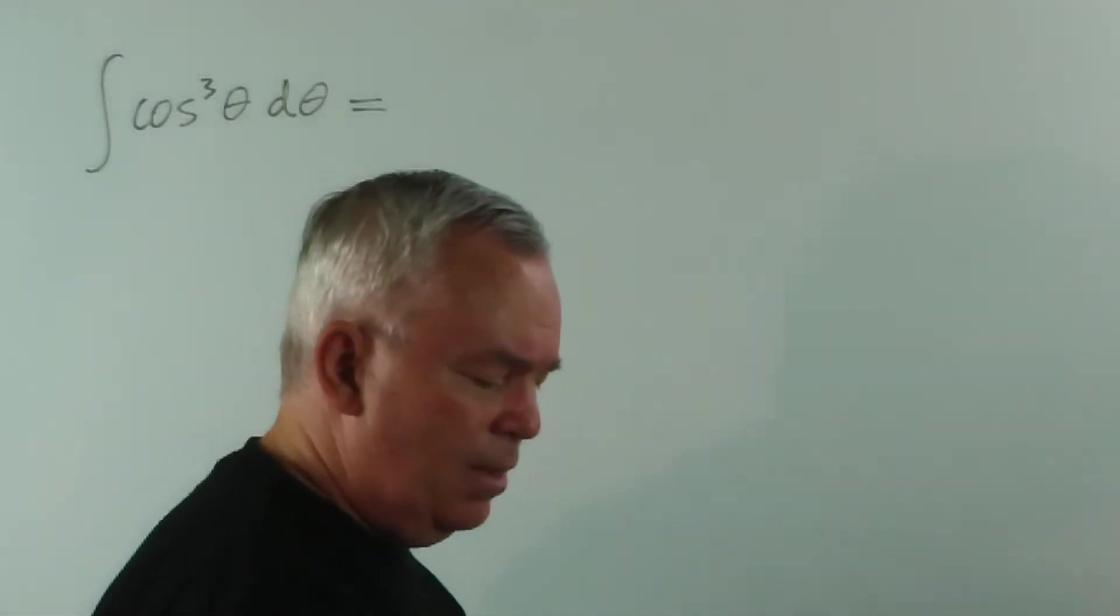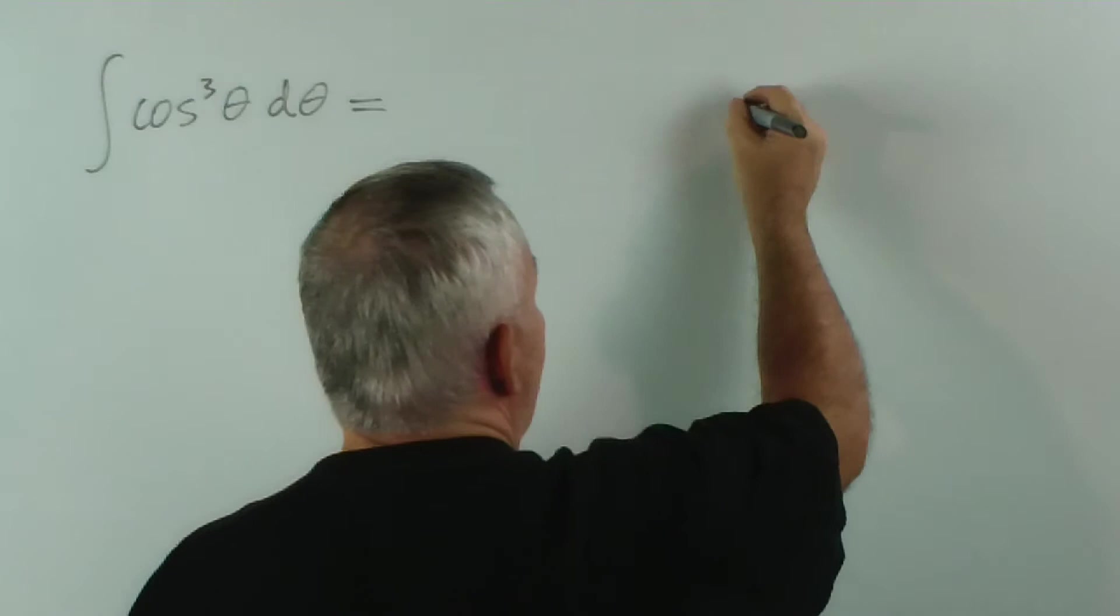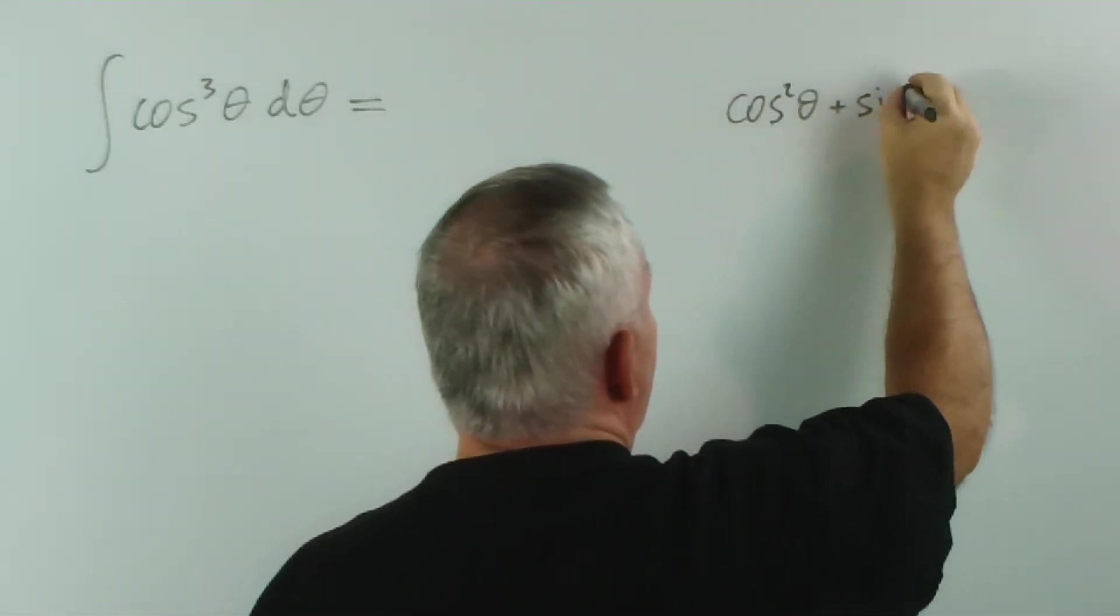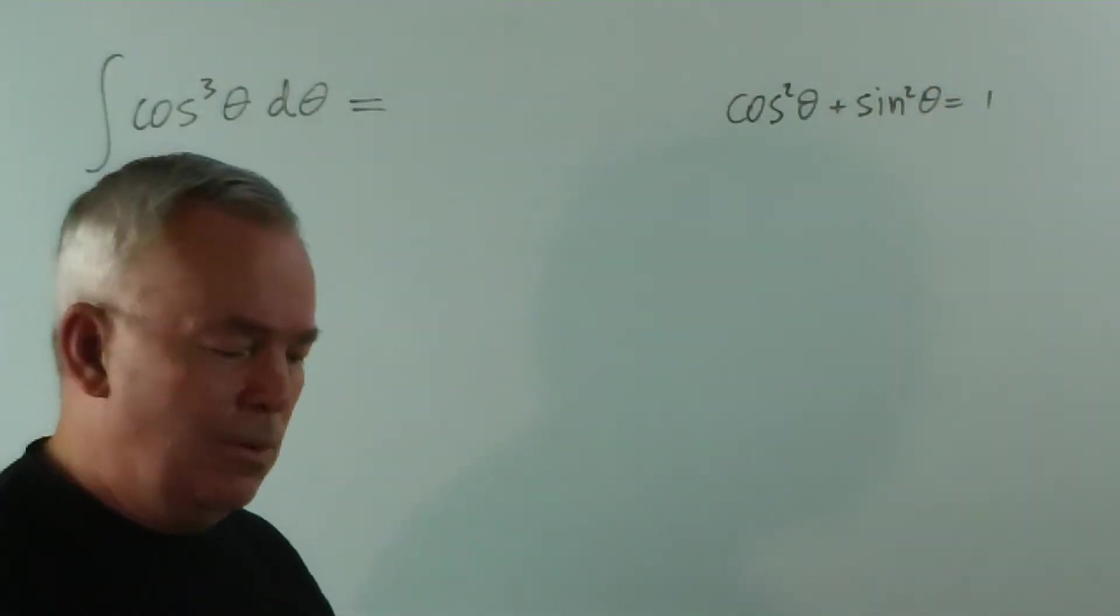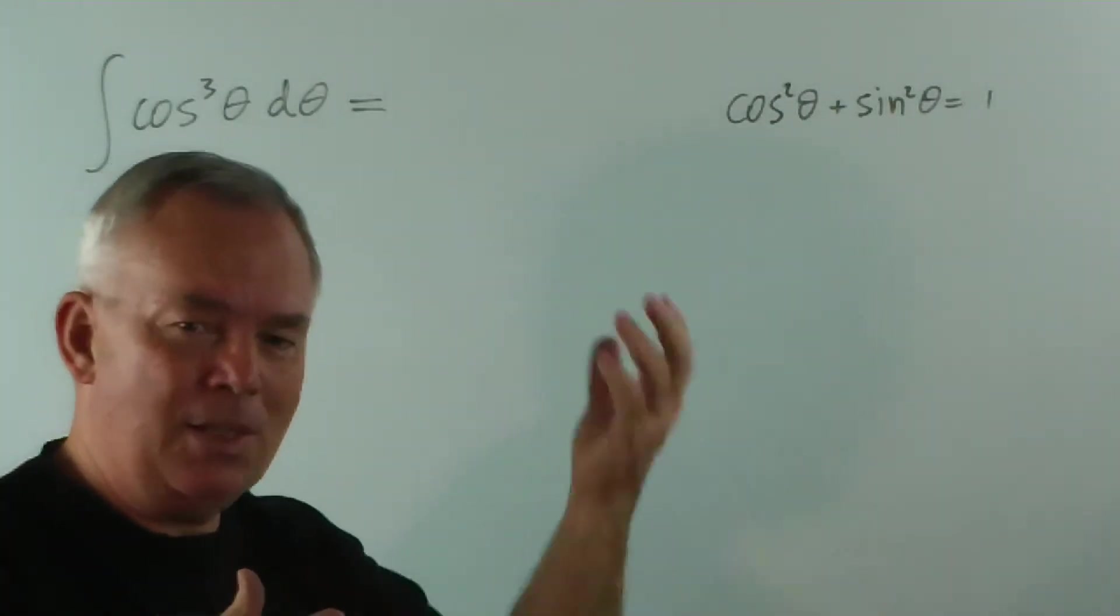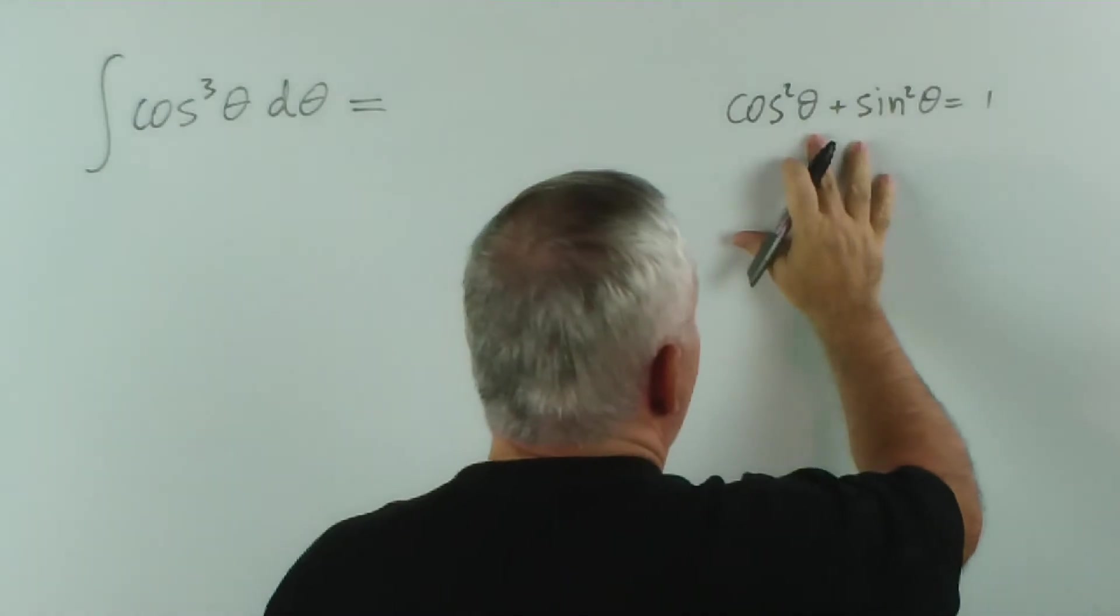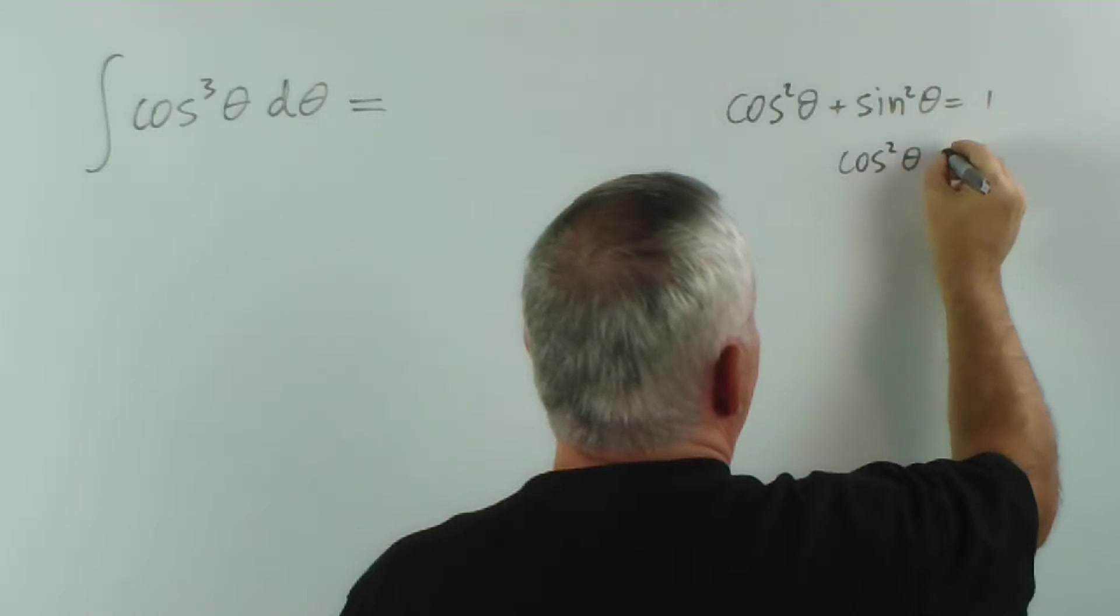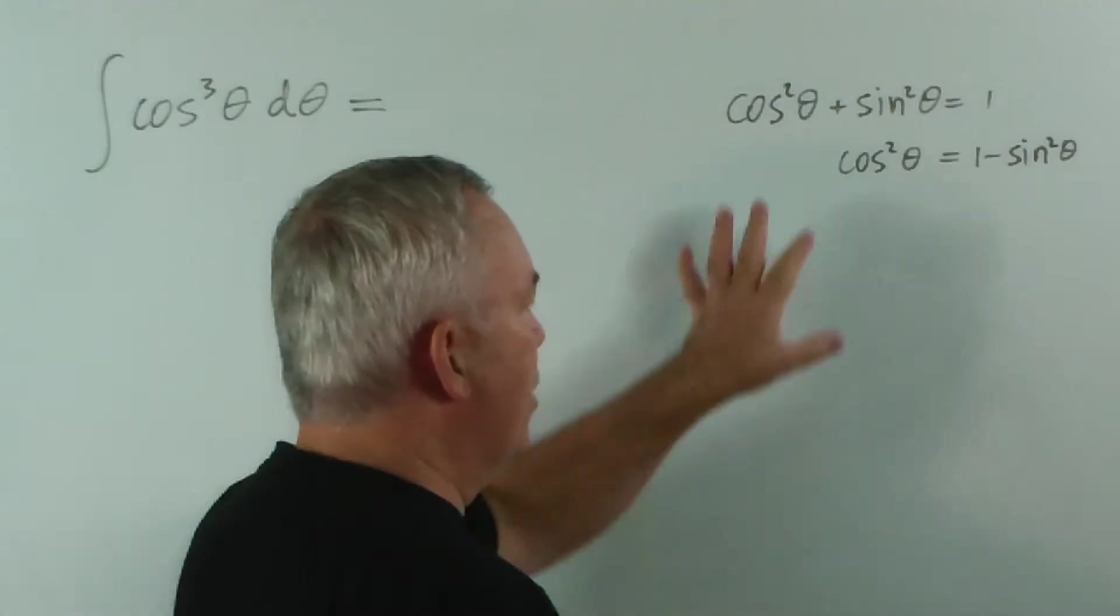cos θ doesn't appear in too many equations, but cos squared θ does. And I think you'll remember seeing this — cos squared θ plus sin squared θ equals 1. So, since we're working in the field of trigonometry, remembering other identities — other things we've learned about trigonometry — can be helpful. This means that cos squared θ is equal to 1 minus sin squared θ. Just rearranging that equation.